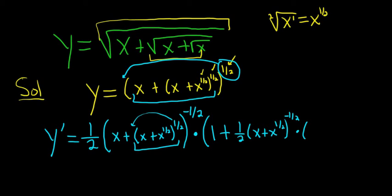So the derivative of x is 1. Ridiculous. And then this derivative here, it's 1 half x to the negative 1 half. And then you close it, right? And then you need another parentheses, right, to close this one.